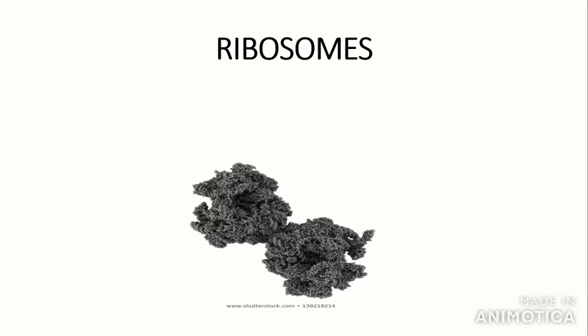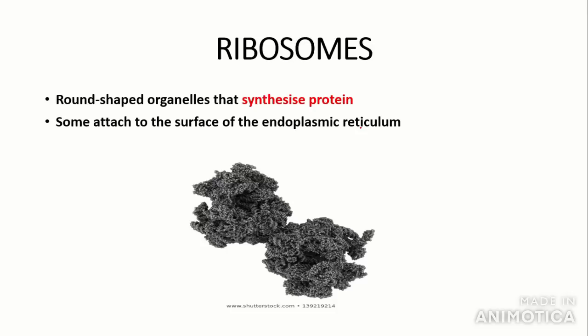Next we're going to talk about ribosomes. Ribosomes are round-shaped organelles that synthesize protein, more specifically in the translation step of protein synthesis, which will become more clear when we get onto that topic. Some of these attach to the surface of the rough endoplasmic reticulum, which we will get onto next.